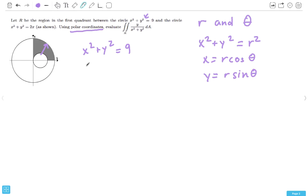So, we know that this is equal to r squared equals 9, which means r equals 3. Cool. So, now let's convert this one. It's a little stranger.